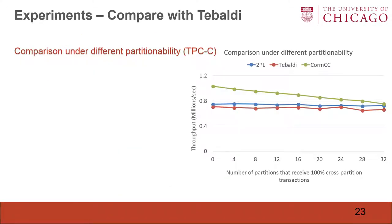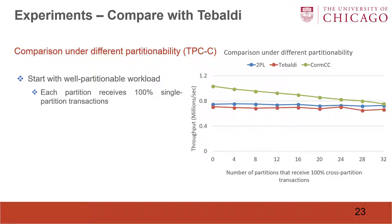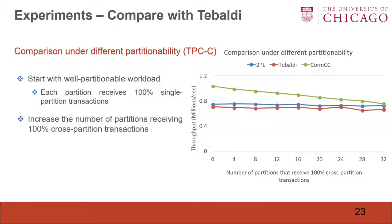We first perform an experiment to compare COMCC with Tabeldi. We vary the partitionability, starting with a partitionable workload where each partition receives 100% single-partition transactions, and then increase the number of partitions receiving 100% cross-partition transactions, making the whole workload non-partitionable. We can see that at first, COMCC performs much better than Tabeldi and two-phase locking, and its performance gets closer to two-phase locking at last. We can also see that Tabeldi performs slightly worse than two-phase locking because of its additional mixed concurrency control overhead.